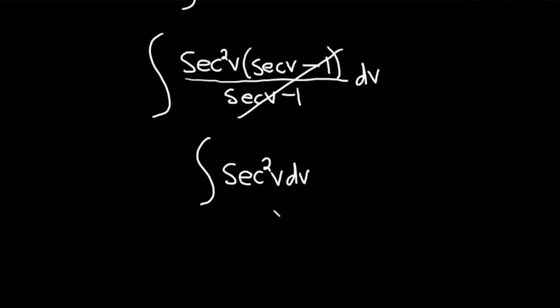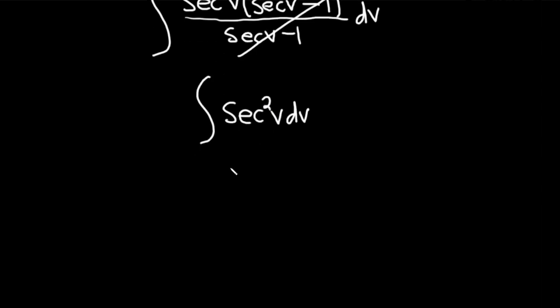Now we're integrating, so we want to think backwards. Do we know a function whose derivative is secant squared? Well, the derivative of tangent is secant squared. When you integrate secant squared, you should just get tangent. This is the tangent of v plus our constant of integration, capital C.